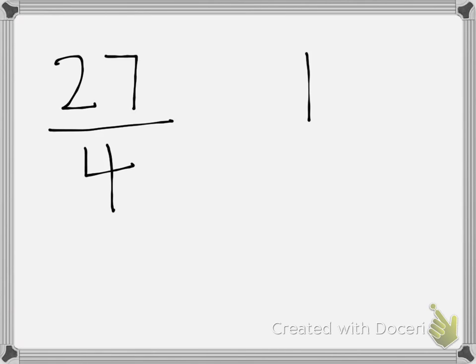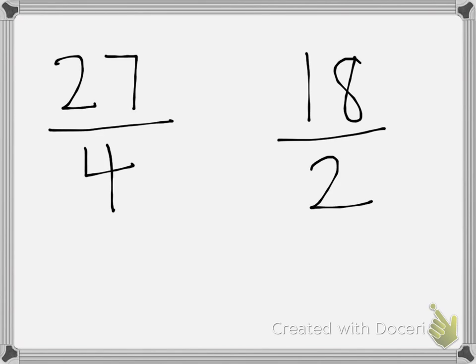Another example is 18 halves. The numerator 18 is greater than the denominator 2. We don't want to keep these as improper fractions — we want to rewrite them and create mixed numbers.